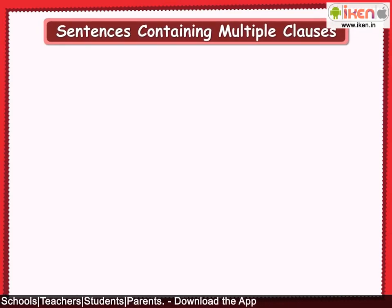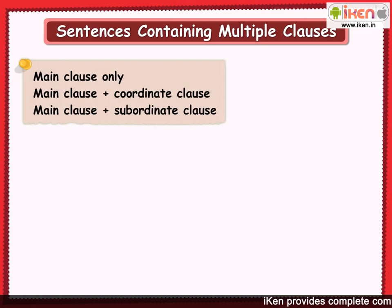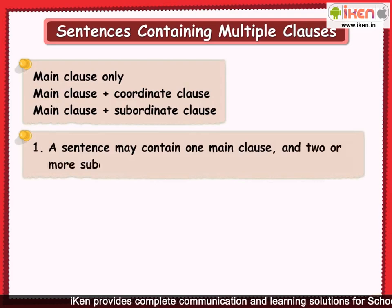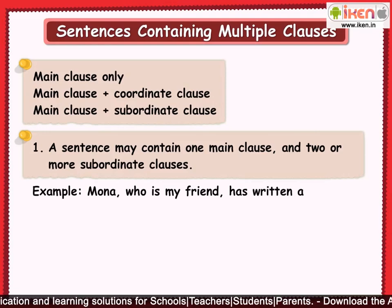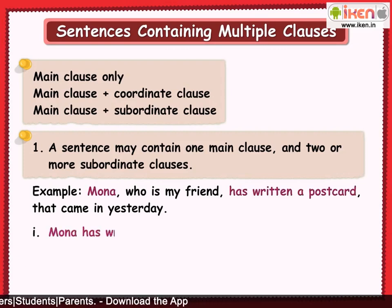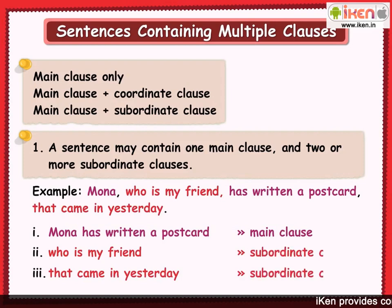We have so far seen examples of sentences having one main clause plus one coordinate or subordinate clause. However, a sentence may have more than two clauses. A sentence may contain one main clause and two or more subordinate clauses. For example: 'Mona, who is my friend, has written a postcard that came in yesterday.' In this sentence, the main clause is 'Mona has written a postcard.' The other two clauses, 'who is my friend' and 'that came in yesterday,' are subordinate clauses since they do not make complete sense by themselves.